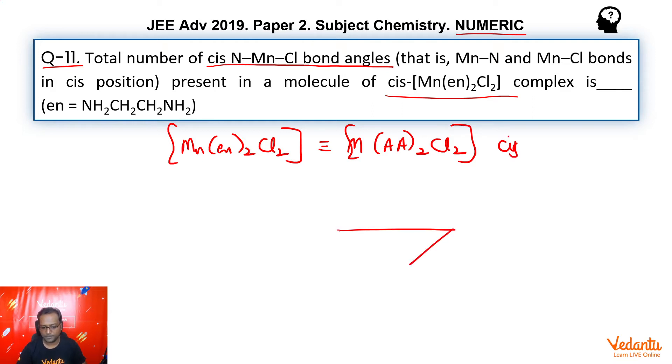Let's draw it. This is how we draw a system. Now, cis form means 2 Cl at 90 degrees and then En, ethylenediamine. Ethylenediamine is this system: NH2-carbon-carbon-NH2.